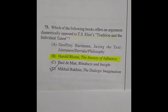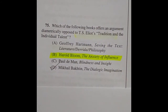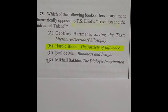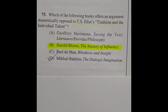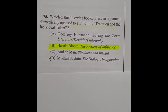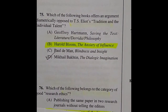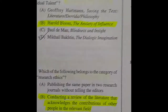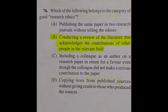Question 75: Which of the following books offers an argument diametrically opposed to T.S. Eliot's 'Tradition and the Individual Talent'? The right answer is Harold Bloom's The Anxiety of Influence.